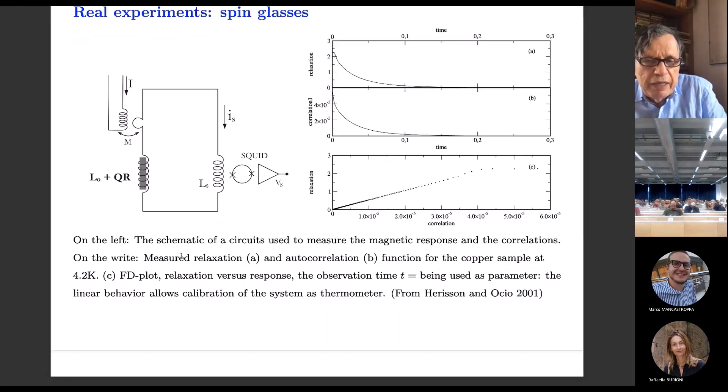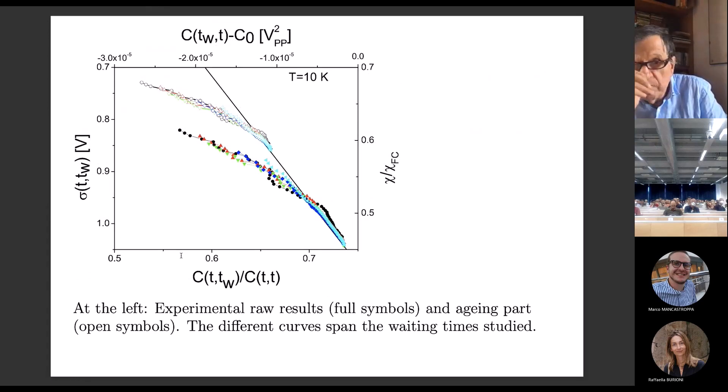An experiment has been done first with a conventional system. A system which should not be a complex system, which does not have very strange off-equilibrium situations. You just take a copper rod and you have a squid. You can plot the spontaneous fluctuations of the magnetization versus the correlations and you find, as expected, a simple straight law. This is a very elegant experiment which you measure the temperature of the copper rod without touching it.